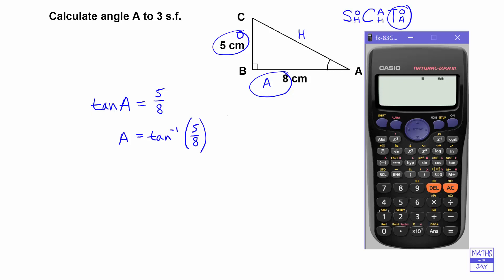So we want the inverse tangent to start with, so that means we need shift tan and we've already got an open bracket. Let's use the fraction key and now we just key in the 5, use the arrow down key to go to the denominator, and then we want 8 and the arrow to the right, close the bracket. So that looks exactly like what we've written: the inverse tangent of 5/8, the angle whose tangent is 5/8. And then we do equals and there's our angle, and we want the answer to three significant figures.